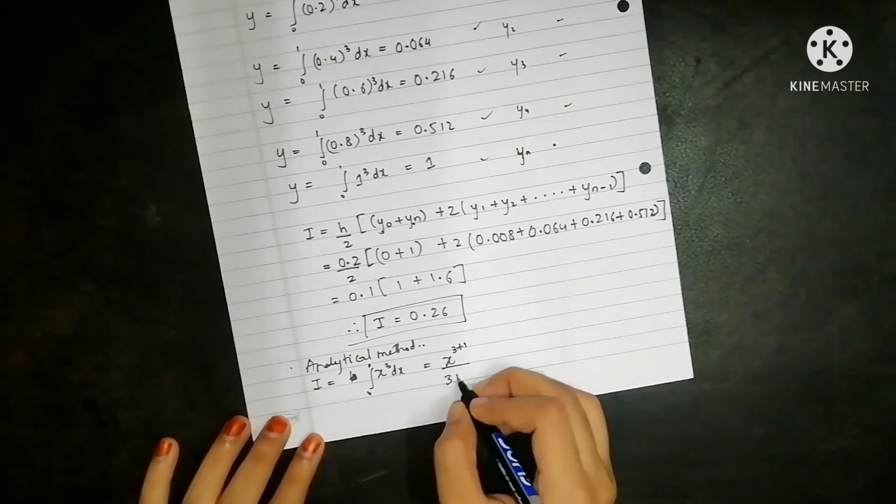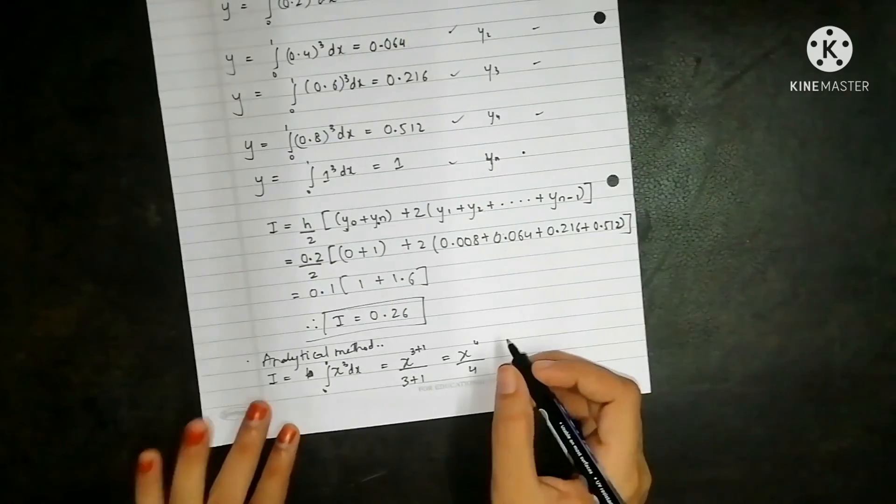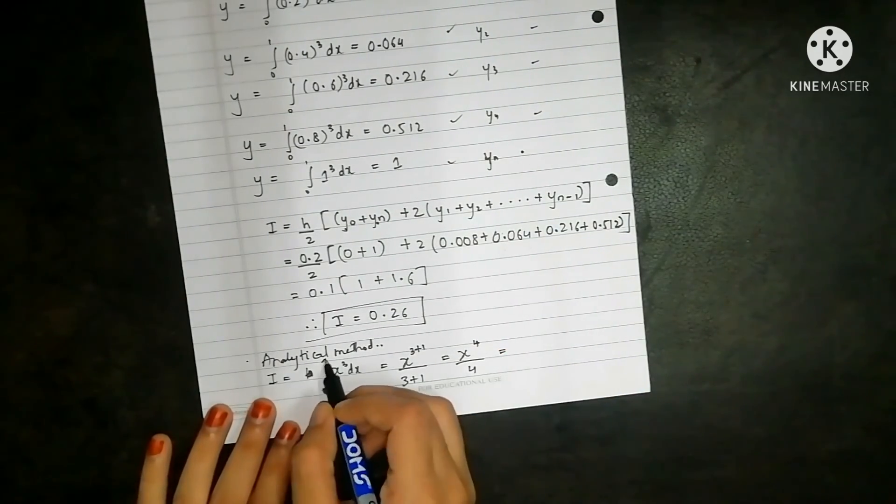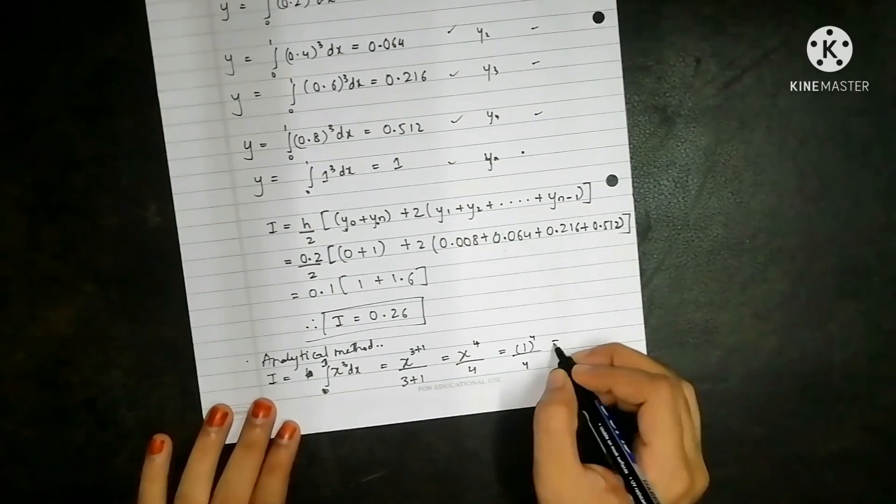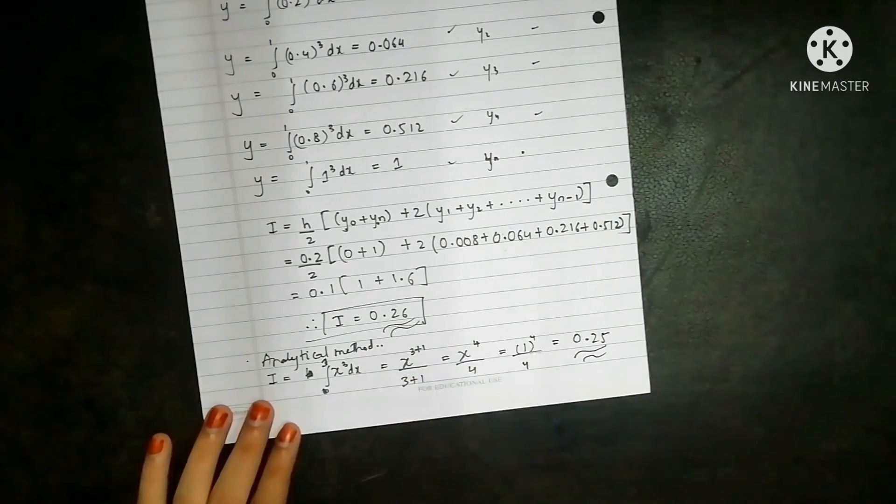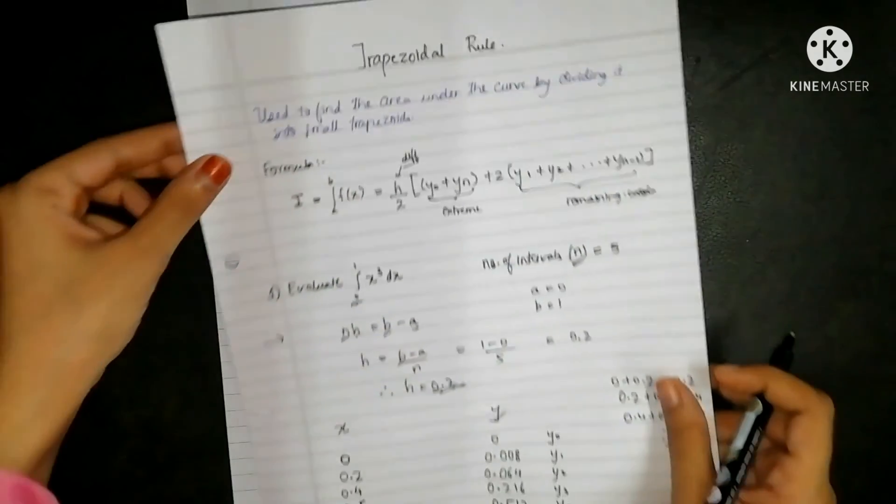So this will be equal to x raise to n plus 1 upon n plus 1. So 3 plus 1 upon 3 plus 1, so x raise to 4 upon 4. We have the limits as 0 to 1, so 1 raise to 4 upon 4 and the value is 0.25. You can see the values are approximately equal. In this way we have solved the equation using trapezoidal rule.